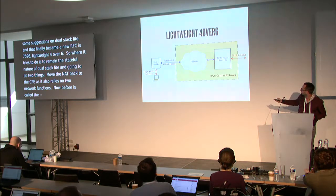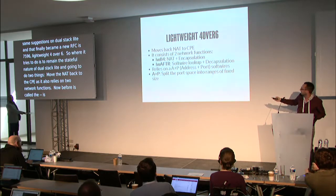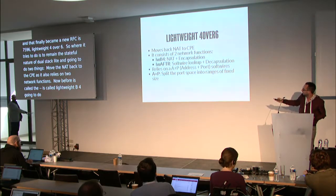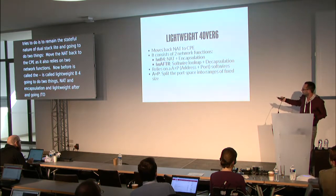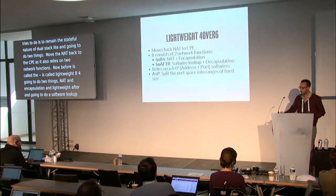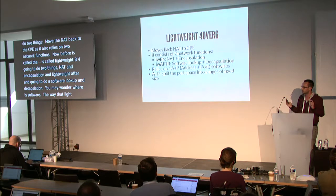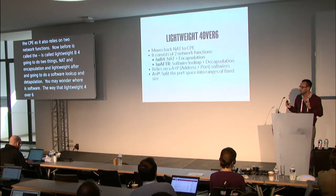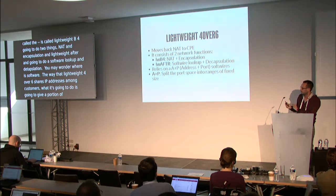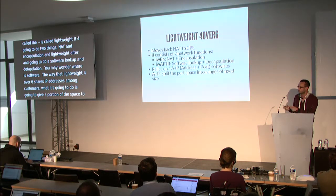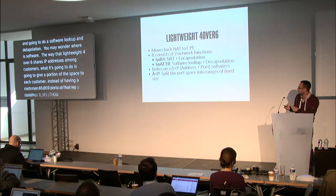The first function is called the Lightweight B4 — it does two things: NAT and encapsulation. The second is the Lightweight AFTR, which does a softwire lookup and decapsulation. The way Lightweight 4 over 6 shares IP addresses among customers is different — it's not going to do NAT at the core. Instead, it gives a portion of the port space to each customer. So instead of having all 65,000 ports, a customer might get 1,024 ports.